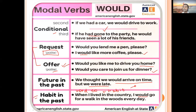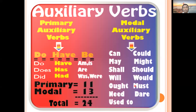These were the modal auxiliaries we discussed. Recall that primary auxiliaries include 'do/does/did', 'have/has/had', and 'is/am/are/was/were'. Modal auxiliaries number 13 and include: can, could, may, might, shall, should, will, would, and also 'ought to', 'need to', 'dare to', and 'used to' — which we will discuss briefly.